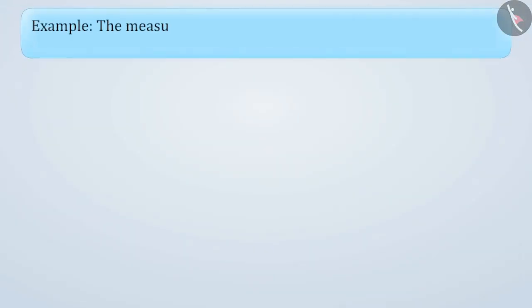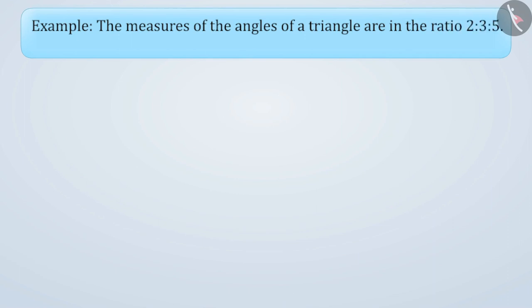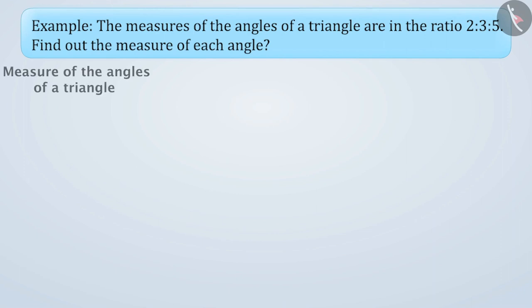The measures of the angles of a triangle are in the ratio of 2 is to 3 is to 5. Find out the measure of each angle.